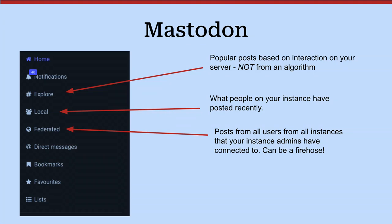Local is just people on the same instance you're on, what they're talking about with each other — just people who've been posting stuff on that instance. So for drupal.community, it's just the Drupal community people and stuff they've been posting. Federated means it's a list of all of the posts from instances your instance is connected to — kind of like the firehose feed, a feed of just everything coming in. And then direct messages, bookmarks, favorites, and lists — you can make lists like you can on Twitter.